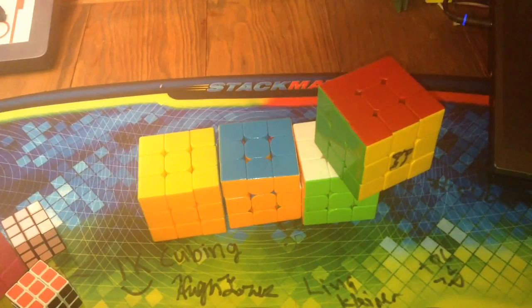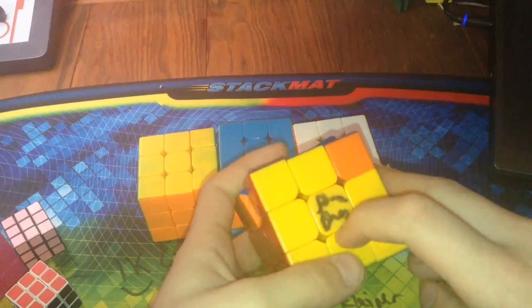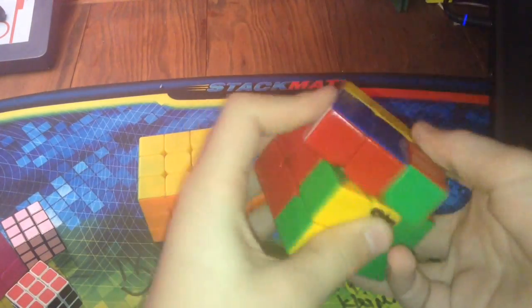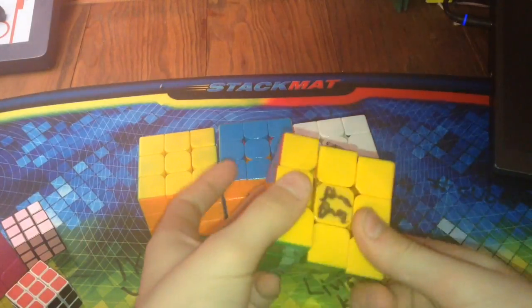The next cube is my first ever speed cube, the Dayan Zhanchi, signed by Feliks Zemdegs. Still pretty nice. Definitely not going to be my main, but I like it.